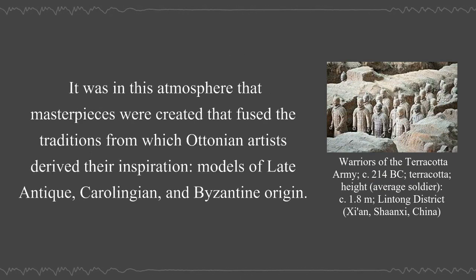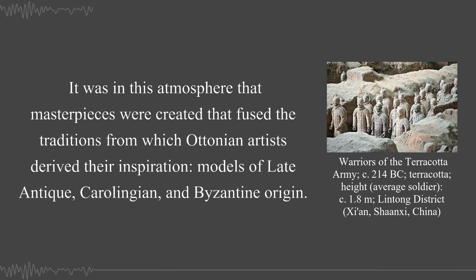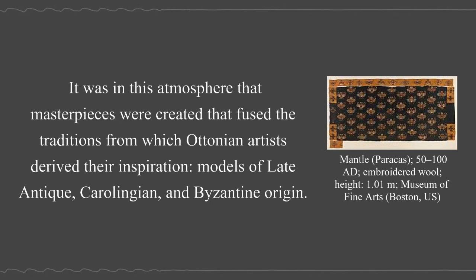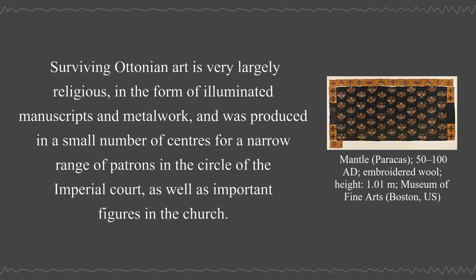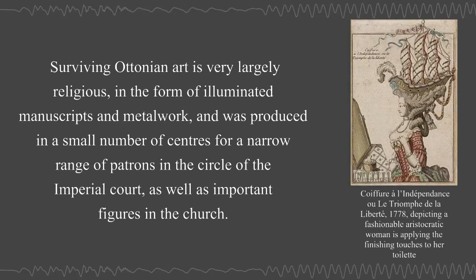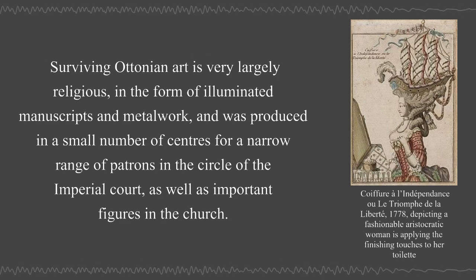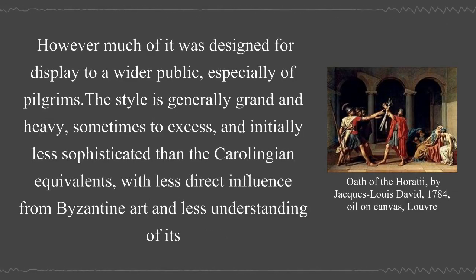It was in this atmosphere that masterpieces were created that fused the traditions of late antique, Carolingian, and Byzantine origin. Surviving Ottonian art is very largely religious, in the form of illuminated manuscripts and metalwork, produced in a small number of centers for a narrow range of patrons in the circle of the imperial court, as well as important figures in the church. However, much of it was designed for display to a wider public, especially pilgrims.